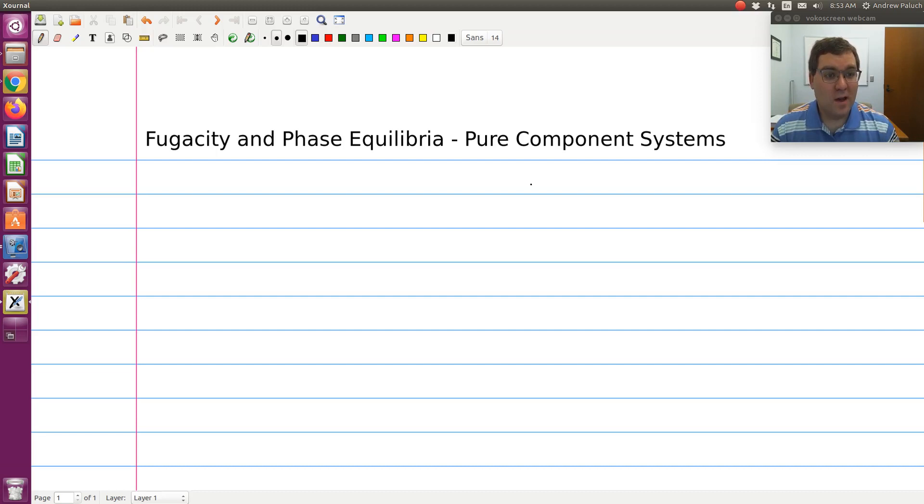I emphasize that we're looking at pure component systems because in general, we would just get to the isofugacity criteria. So if I'm talking about phase equilibria, my criteria of phase equilibria is one, thermal equilibrium.